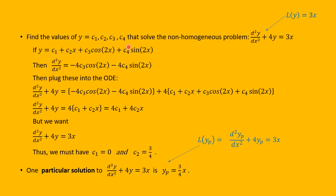The second derivative of y plus 4 times y gives: minus 4c3 cosine 2x plus 4c3 cosine 2x — those add up to zero. We also have minus 4c4 sine 2x plus 4c4 sine 2x — those two terms add up to zero. So the only thing remaining is 4 times the c1 and c2 terms, and the second derivative of y plus 4y equals 4c1 plus 4c2x.